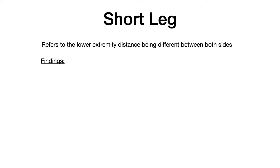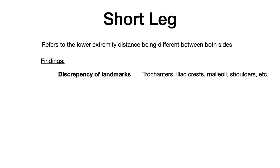When you have a short leg, there are certain findings to look for — the types of diagnostics or symptoms that test writers will give you in the vignette on Comlex or in-class exams. The first finding is discrepancy of landmarks. When performing an osteopathic structural exam, look for discrepancies between the trochanters, the iliac crests, the malleoli (specifically the medial malleolus), and the shoulders. These side-to-side discrepancies indicate imbalance.